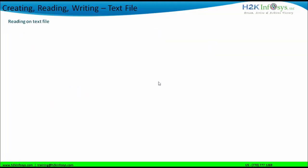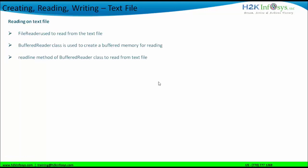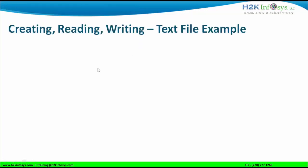We will use the write method of the BufferedWriter class to write on the text file. The write method is used to write on a specific line. If we want to use a fresh line to write another line, we will use the newLine method of the BufferedWriter class. We will also have to use the flush method so that we can flush out the buffered memory. If you do not use the flush method, the writing will not actually be committed to the text file. For reading from the text file, we use the FileReader class, then the BufferedReader class, and the readLine method.